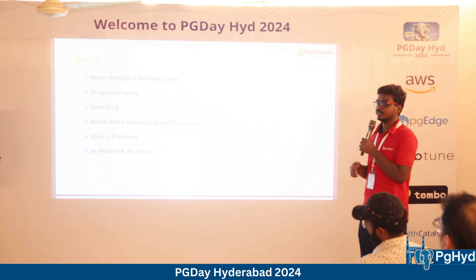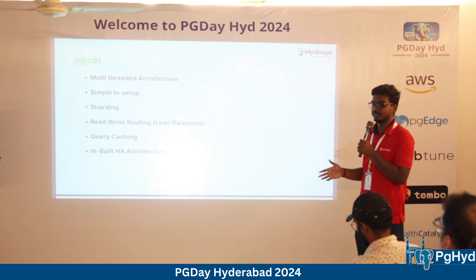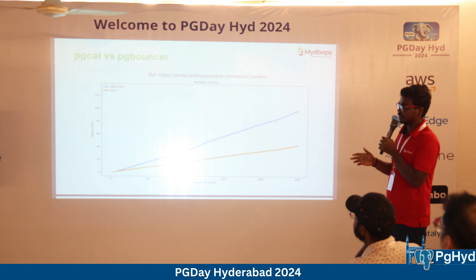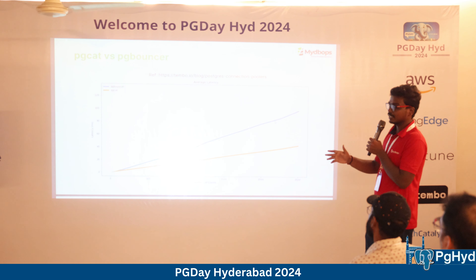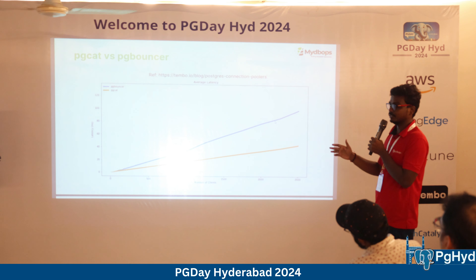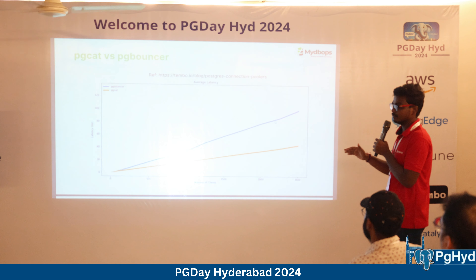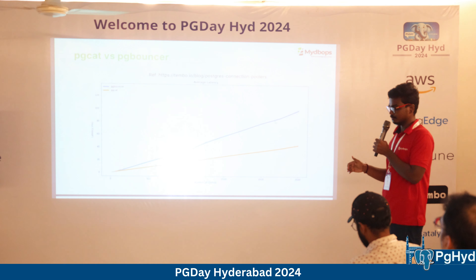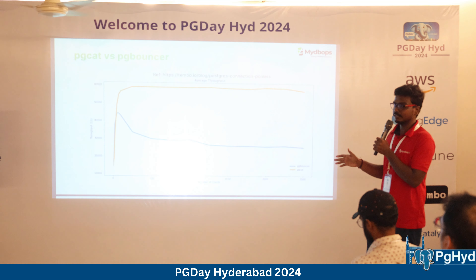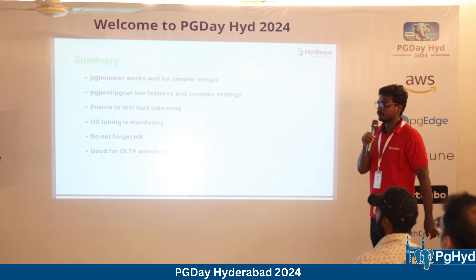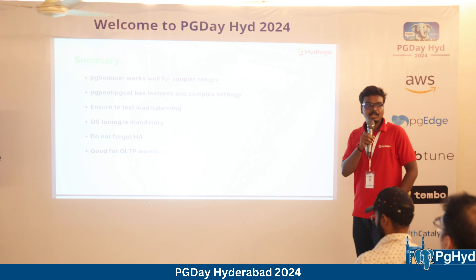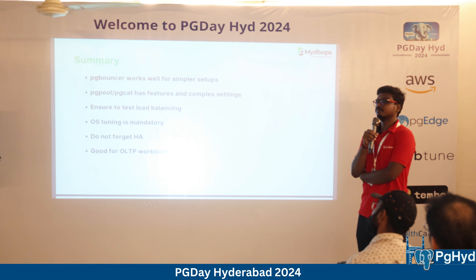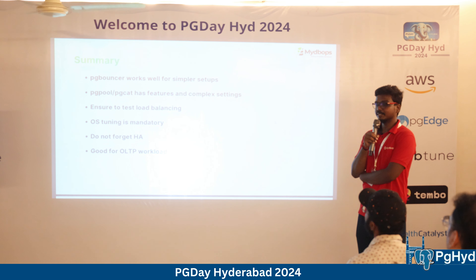For failover capability, PG Pool 2 is recommended — it can redirect connections based on availability. PG Pool 2 is a complete multi-threaded architecture that can effectively use multiple CPU cores. It supports read/write query routing, query caching, and has built-in HA with keepalived. However, configuration complexity is much higher and resource usage is greater because it processes all queries, unlike PG Bouncer which just forwards them.